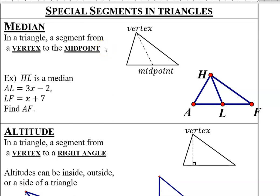So if I know that HL is a median, then that means that point L over here is the midpoint. And that means that this side, 3X minus 2, will equal this side, X plus 7. I can just set them equal to each other. So 3X minus 2 equals X plus 7. I'll solve this and get 2X equals 9. So X would equal 4.5.